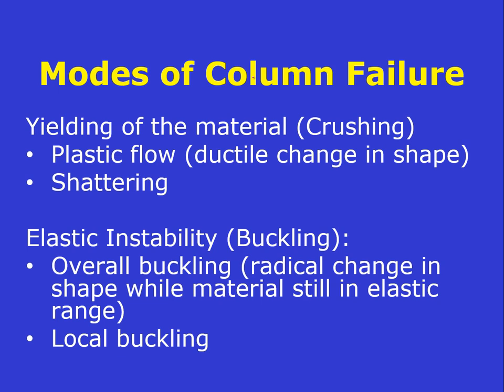As we've mentioned the modes of failure for a compression member can be yielding in the material which may be plastic flow, something we would observe in steel, or shattering which is something we'd observe in a brittle material like concrete. Under plastic flow there's what we call a ductile change in shape. If we've ever taken a coat hanger and bent it we know it doesn't go back to its original shape and that failure mode is what we call ductile or plastic flow failure. If the coat hanger was made out of chalk or concrete we would never observe that behavior because it would snap beforehand. The other mode of failure is elastic instability which involves a radical change in shape. And by the way there are two kinds. There's the overall buckling of the column and then there's something called local buckling where some portion of the column begins to deform in a radical way even before the material reaches the elastic limit.